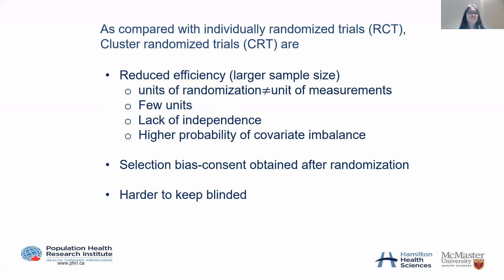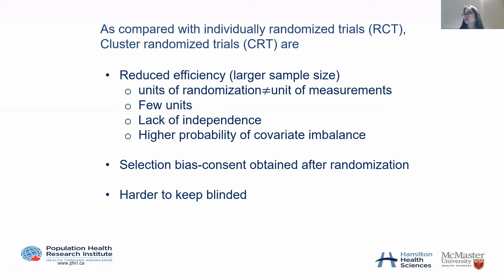Compared with individual randomized trials, cluster randomized trials are less efficient because the unit of randomization is at the cluster level instead of the individual level. It is randomized at the cluster level but analyzed at the individual level, resulting in less efficiency and requiring a larger sample size. Additionally, patients belonging to the same hospital or community may have similar characteristics and tend to have similar responses within a cluster compared to individuals from different clusters — a lack of independence.